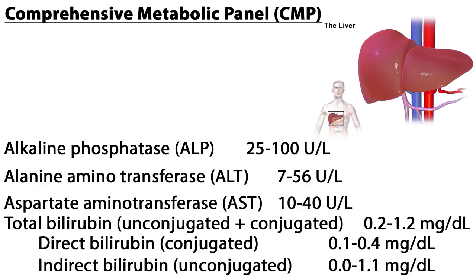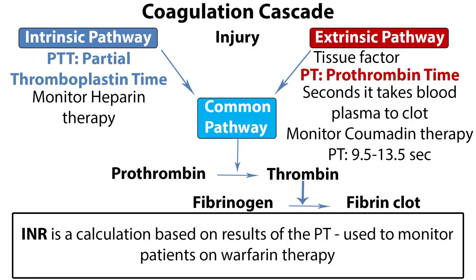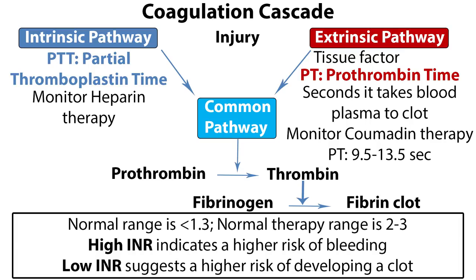We've now covered all 14 tests on the CMP. Now let's look at a brief overview of coagulation studies. Prothrombin time, or PT, measures the number of seconds it takes blood plasma to clot. It evaluates the efficiency of the extrinsic pathway and is used to monitor Coumadin therapy; the reference range is 9.5 to 13.5 seconds. The INR, or International Normalized Ratio, is a calculation based on results of the PT and is used to monitor patients on warfarin or Coumadin therapy. The normal range is less than 1.3 and the therapy range is 2 to 3, with a high INR indicating a higher risk of bleeding and a low INR suggesting a higher risk of developing a clot. The INR can be used to adjust the patient's drug dosage to get the PT into the desired range.